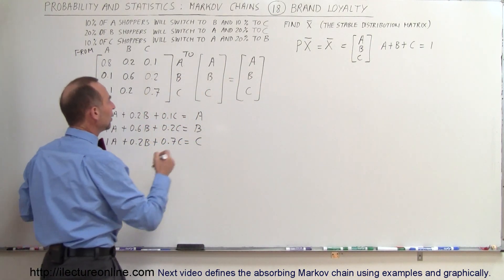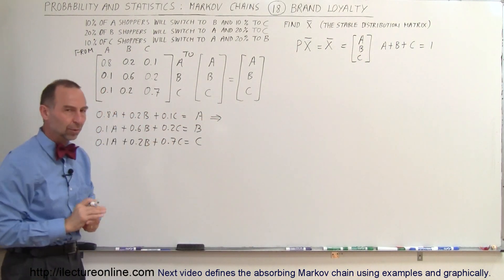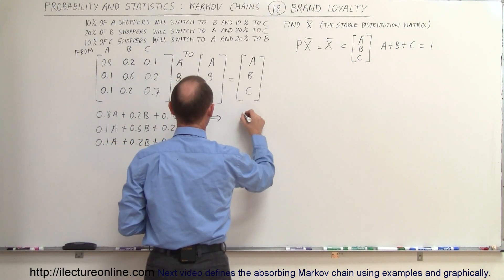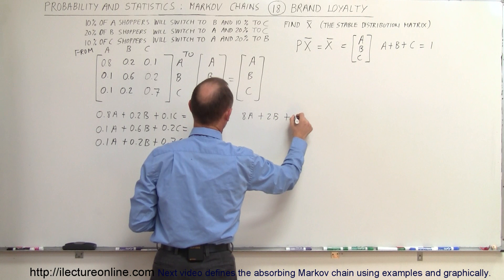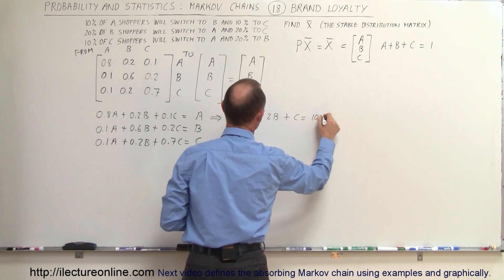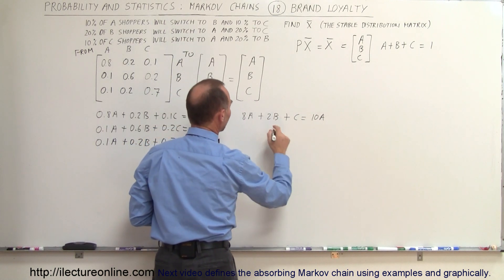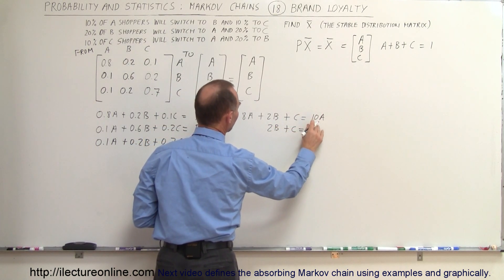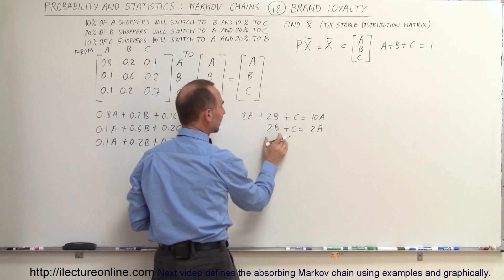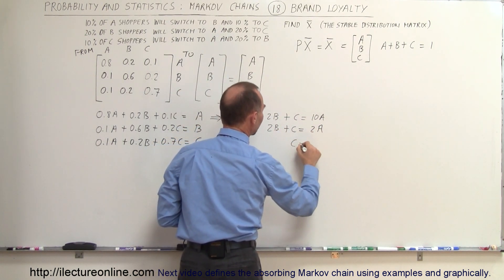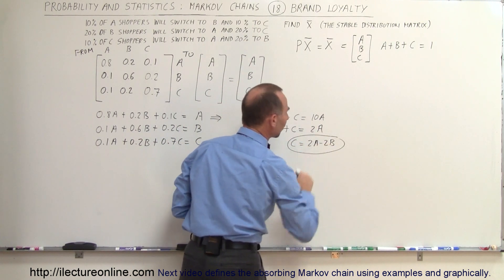Taking the first equation and multiplying both sides by 10 to clear decimals: 8A + 2B + C = 10A. Moving 8A to the other side gives 2B + C = 2A, and then C = 2A − 2B. So we've written C in terms of A and B.